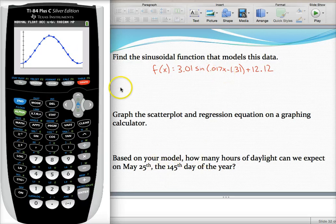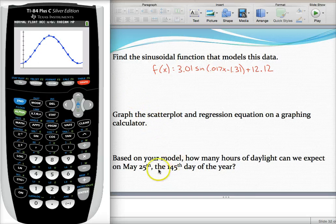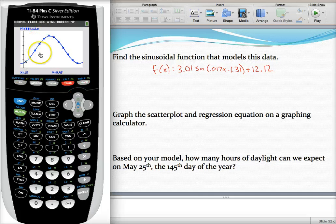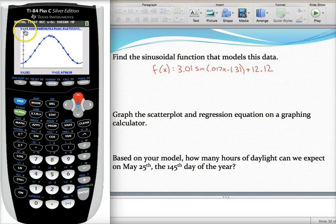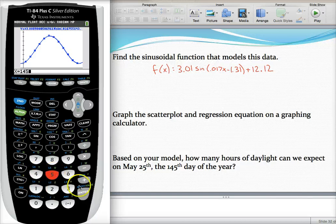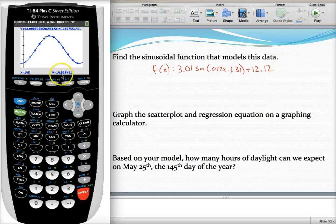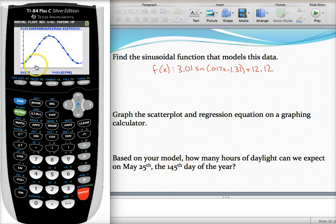Otherwise, I'll show you a way you can do this with your graph, which you could also do with your table. One way to do this would be to hit trace, and then we want to make sure we're on our graph, our curve. Right now I'm on the data. It says I'm on plot 1. So if you press up or down, it'll change, and now it says I'm on y1, which is that curve, that regression equation. And so once you're on that curve, just go ahead and type in 145 and press enter, and it'll jump to the 145th day of the year when we would expect about 14.28 hours of daylight. Same answer you would have got if you plugged in 145 for x. Same thing you would get if you looked in your table and scrolled all the way down to 145, about 14.82 hours of daylight.